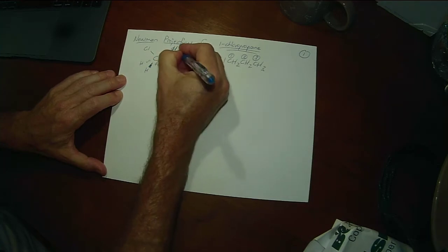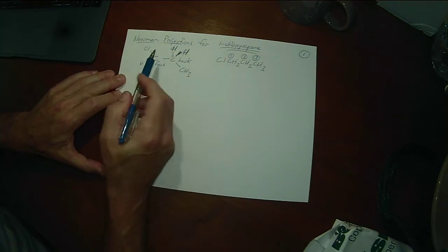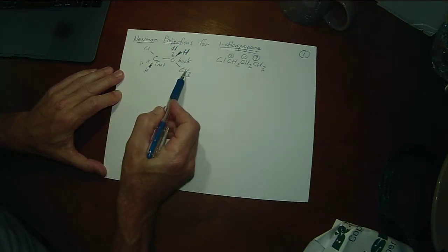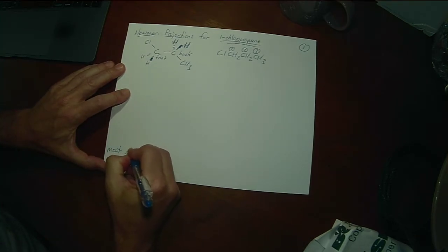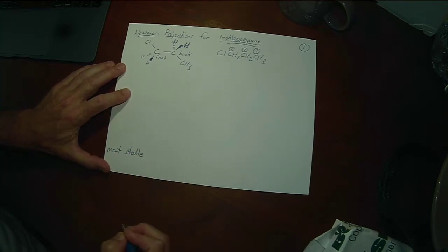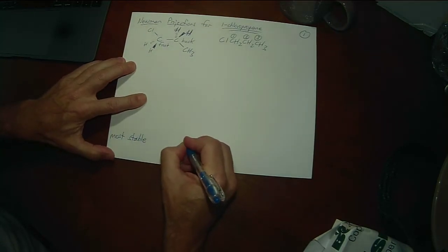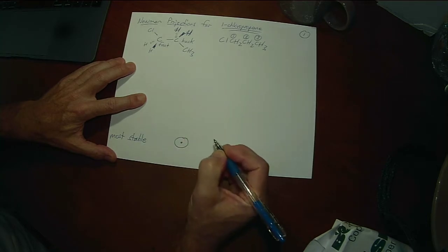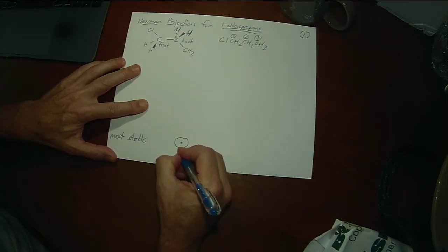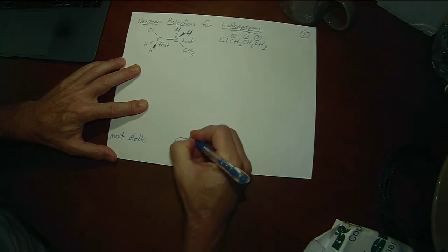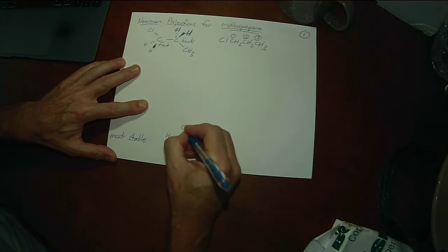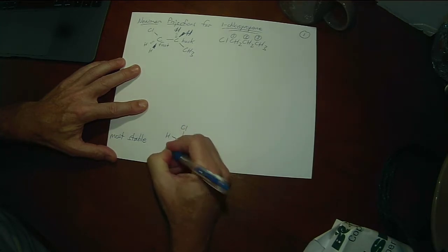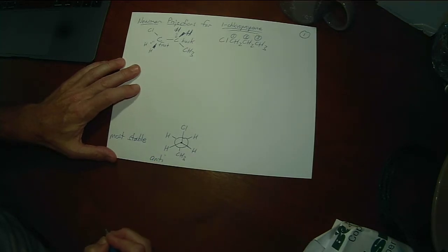I've automatically drawn this in the most stable conformation that puts the chlorine and the CH3 in the anti-position. And it's usually productive to try to draw the most stable conformer first. So on my back carbon, the way I've written it, I've got a CH3 pointing down and hydrogens out here. And then on my front carbon, I've got a chlorine pointing up and the two hydrogens out like this. So that's the anti-conformation that's going to be the most stable.